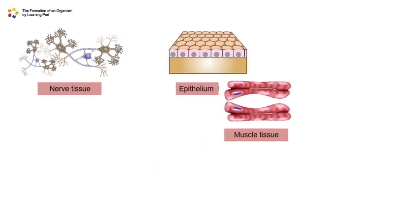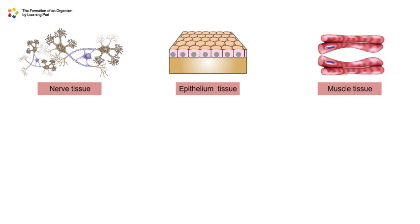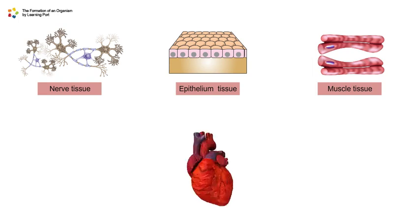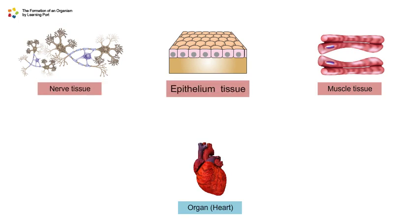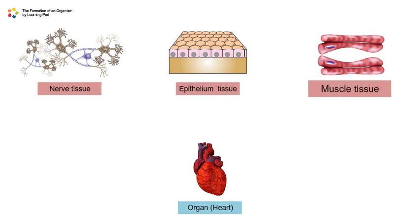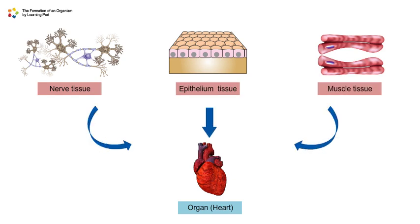A group of different tissues that work together to perform a specific function is called an organ. A heart consists of nerve tissue, epithelium tissue, and muscle tissue, which work together to pump blood to all parts of the body.